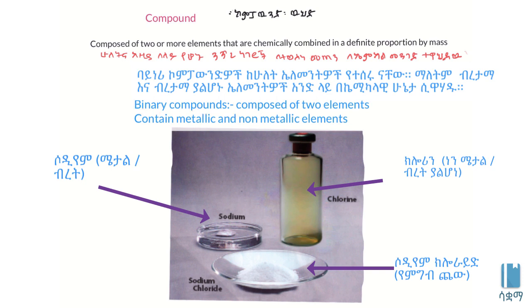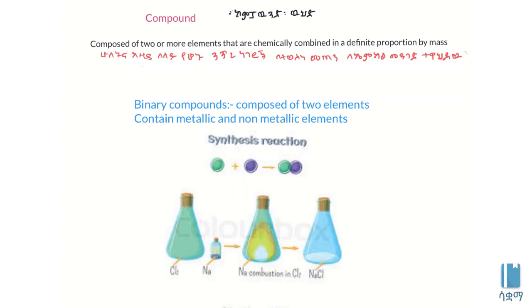Examples of binary compounds include sodium chloride. Sodium metal and chlorine gas combine to form sodium chloride salt.